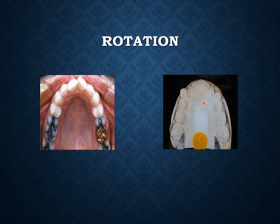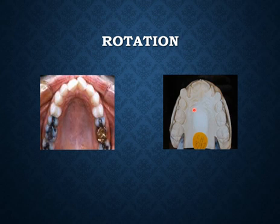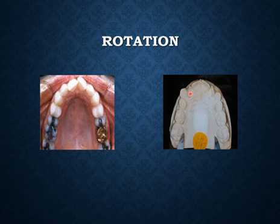Severe rotation is more than 90 degrees and must be treated by fixed orthodontic treatment. So when it is mild — less than 90 degrees — it can be treated by a couple force system with a removable appliance. When it is severe — more than 90 degrees — it is treated by a fixed appliance. Note that even mild rotations can also be treated by fixed appliances.